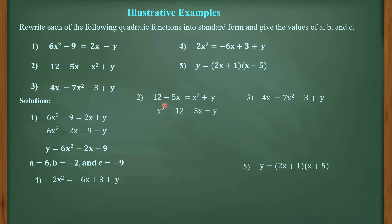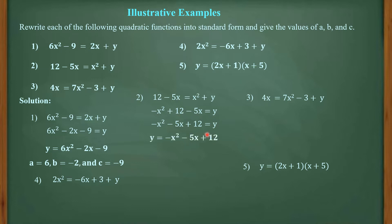For number 2: 12 − 5x = x² + y. We apply the addition property of equality, transferring x² to the left side, making it negative. Repositioning terms in descending order of powers gives −x² − 5x + 12 = y. By symmetric property, y = −x² − 5x + 12. Thus, A = −1, B = −5, and C = 12.